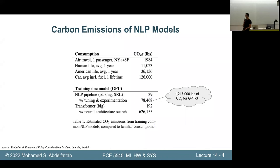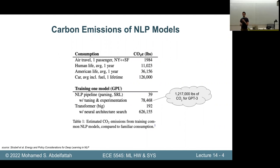Someone brought up a great point: where does the energy come from? Using excess energy from windmills — renewable and excess energy — are great points. Many analyses in these papers are starting to become aware of the source of that energy, and that could be the easiest way to offset some of these carbon emissions. Some companies also just buy carbon credits — offsetting their emissions by planting trees or paying for construction of power plants.